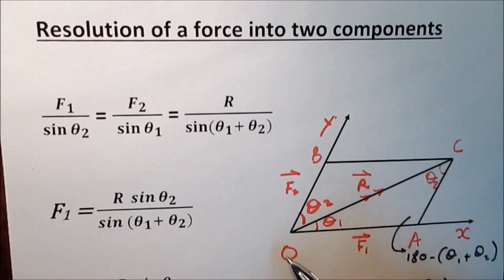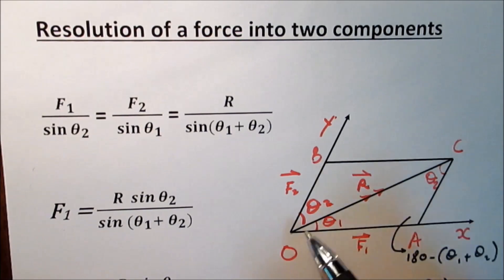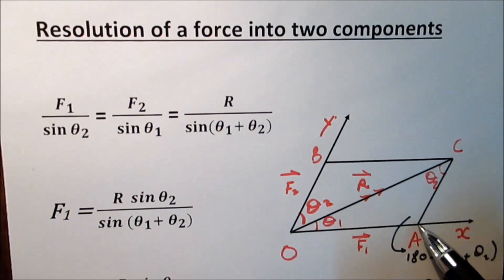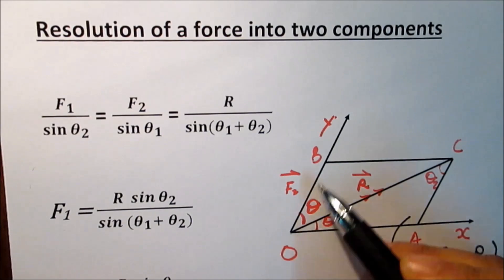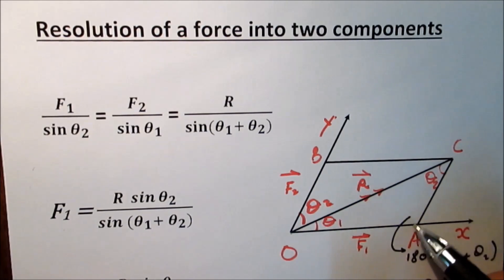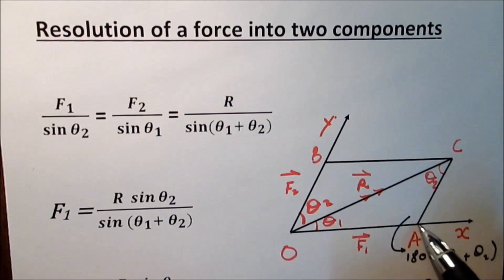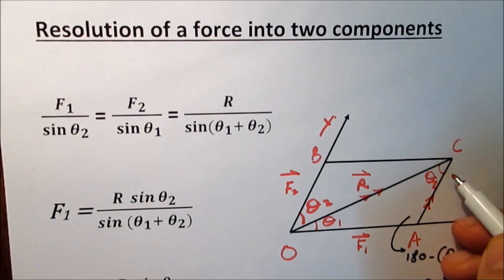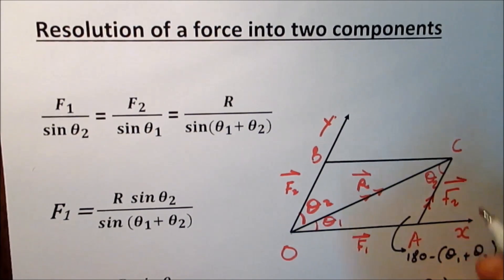We can draw the same parallelogram where the vector OC represents the force R. We complete the parallelogram to find F1 and F2. The measure of angle ACO equals theta2 because they are alternate angles. In triangle OCA, AC is parallel and equal to OB, so AC represents F2 in magnitude and direction.